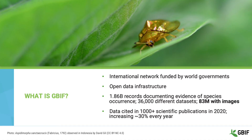GBIF is a multi-government organisation, and we exist to make biodiversity data freely and openly available on the internet, so we build open data infrastructure. We focus on evidence of where species have been recorded, and we've integrated around about 1.8 billion records, of which there's around about 83 million with images. We also track how these data are being used in research, and we're approaching four peer-reviewed papers per day that are citing data mediated through GBIF. These citations are growing at around about 30% year-on-year, and our data is growing at approximately 1 million records per day.